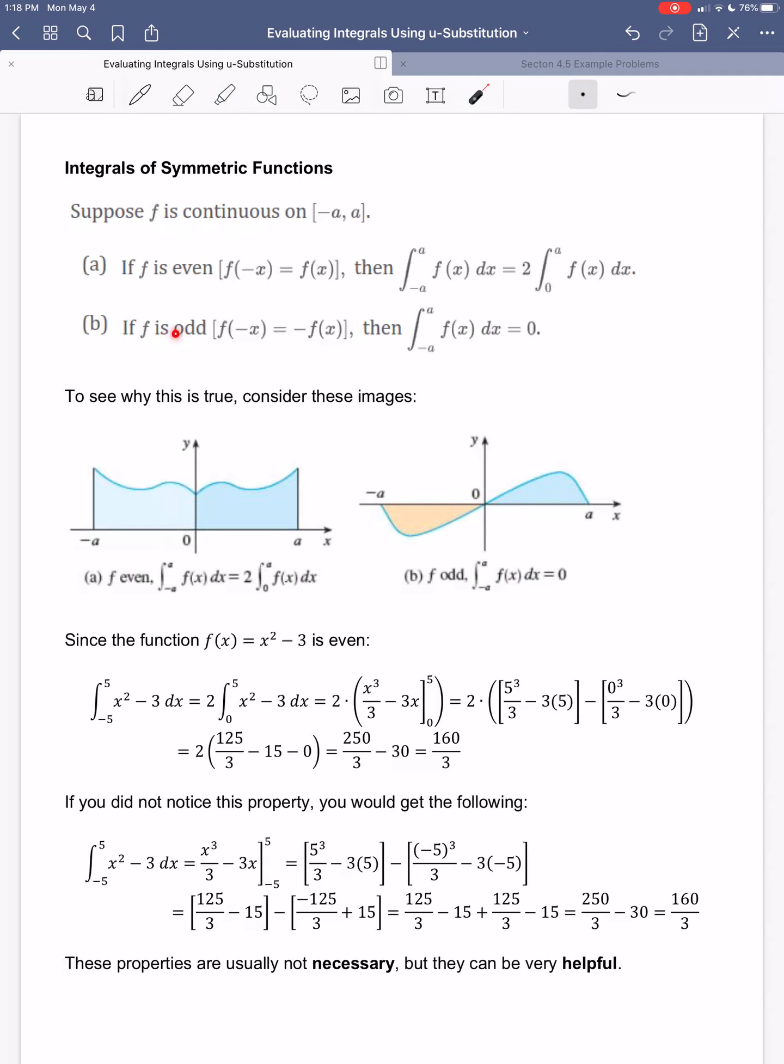If f is an odd function, that means if I switch the input, I switch the sign of the output. Then the integral from negative a to a is actually equal to 0. We see that here, an odd function. When I'm going to the right, my positive x coordinates have positive y coordinates. When I'm going to the left, the y coordinates switch signs. But what this gives me then is it gives me a negative area and a positive area that are exactly the same. So when I add them together, I get 0.